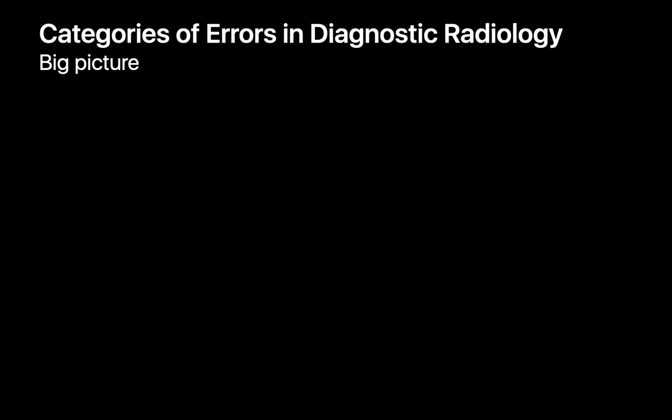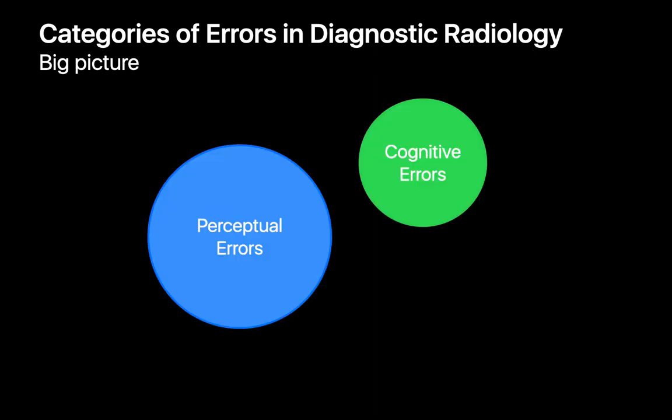Interpretive errors that a radiologist might make can be divided into two major buckets: perceptual errors and cognitive errors.